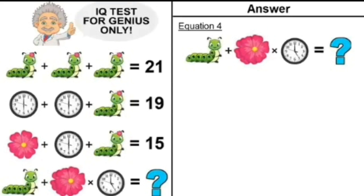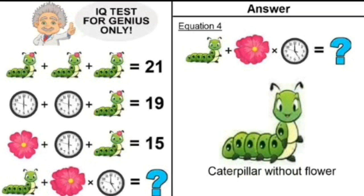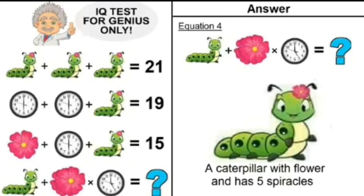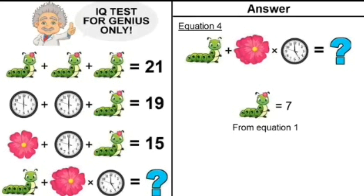Moving on to equation number 4, there are three figures: a caterpillar, flowers, and a clock. The caterpillar here is without a flower — not the same as in equations 1, 2, and 3. Also, if we count the sphericals on its body, it has 6 sphericals, not 5 like the caterpillar in equations 1, 2, and 3. The caterpillar in equations 1–3 had a flower on its head and 5 sphericals, and its value was 7.